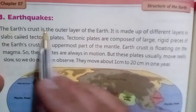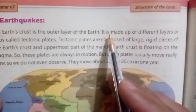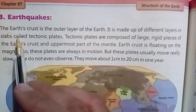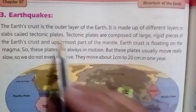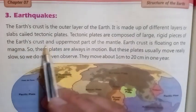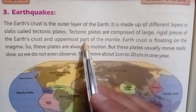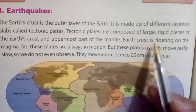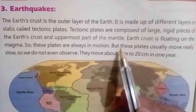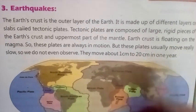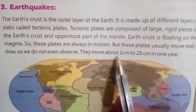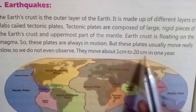The earth's crust is the outer layer of the earth. It is made up of large rigid pieces called tectonic plates. Tectonic plates are composed of the earth's crust and the uppermost part of the mantle. The earth's crust is floating on the magma, so these plates are always in motion, but they move very slowly — about one centimeter to 20 centimeters in one year.